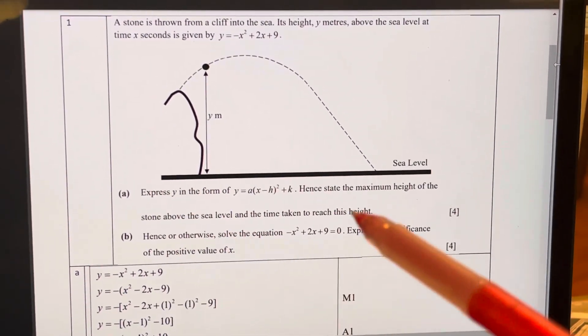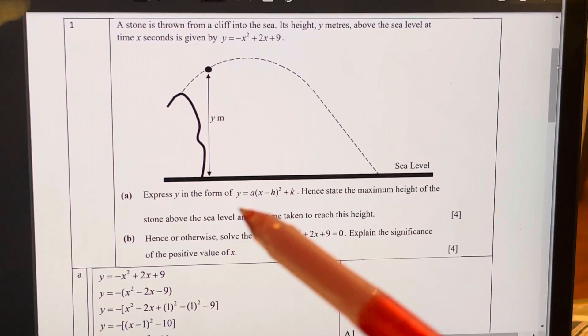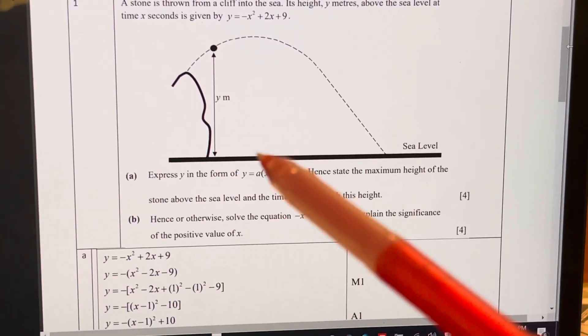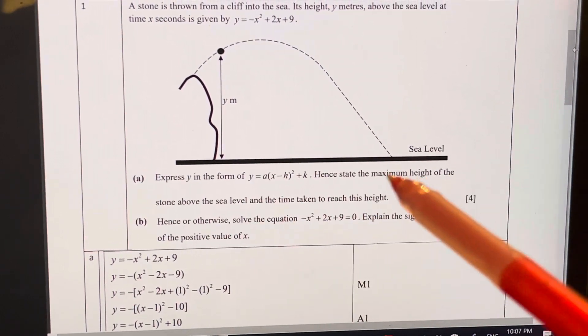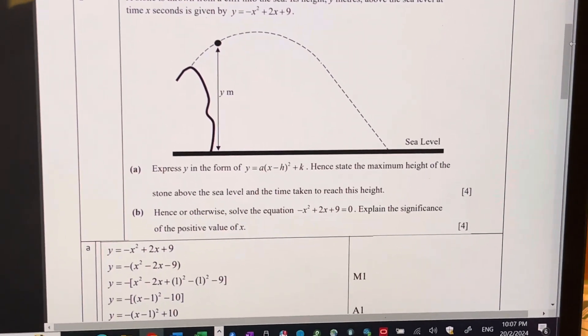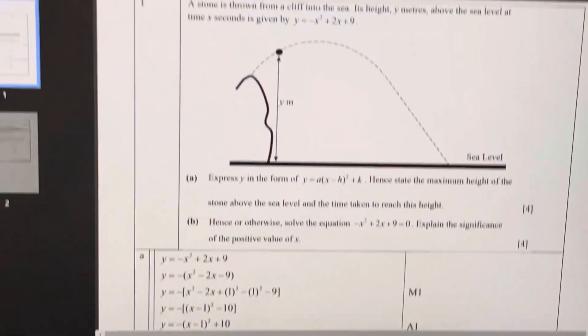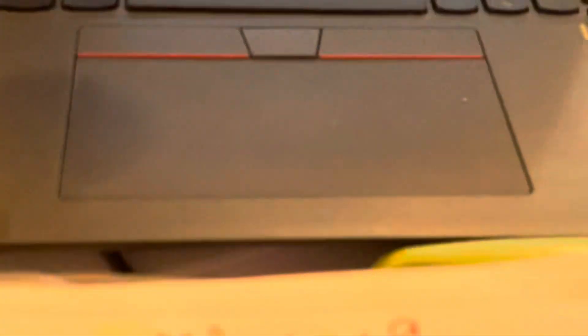Now, the question in part A asks you to express Y in this form. Now, even if they don't ask you to do that, when you see like maximum and then the corresponding time taken, you should know that you must complete the square. And do not use this method, please use this method.